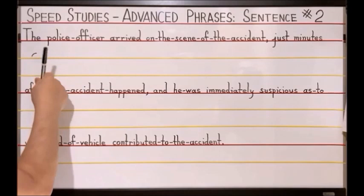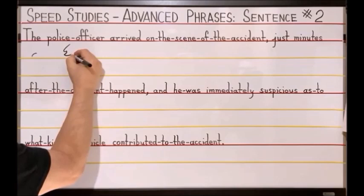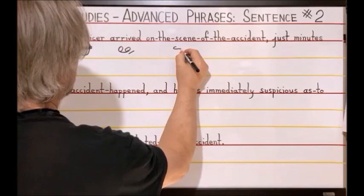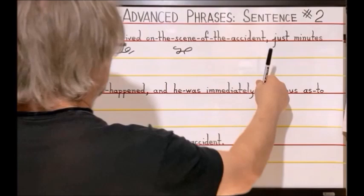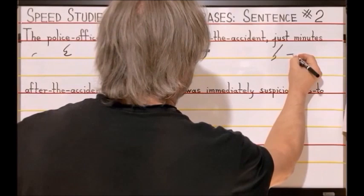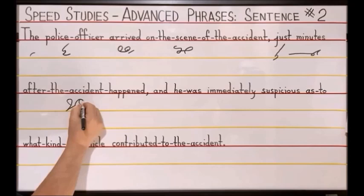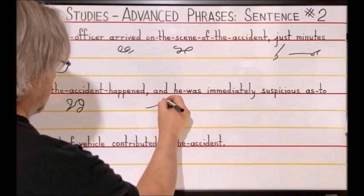The — T-H — police officer: P-O-right-S-R, arrived: A-R-Long-I disjoint-T, on the scene of the accident: O-N-S-E-N-A-S. Just — J-U-S — minutes: M-E-N-stroke E-T-S, after the accident happened: A-F-T-T-H-A-S-A.